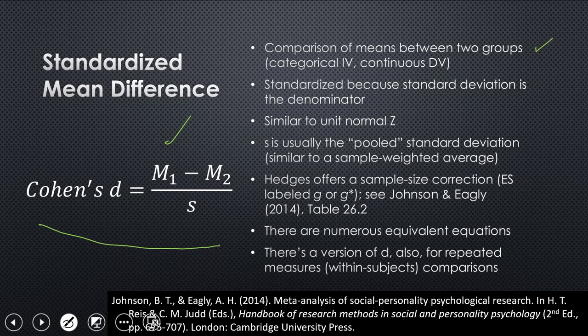So that's a two-group thing. You've got a categorical independent variable and a continuous dependent variable. It's standardized because the standard deviation is the denominator. So it's very similar to a unit normal Z. And it's interpreted very similar to that. When you're meta-analyzing Cohen's Ds, you're actually meta-analyzing standard deviation units.